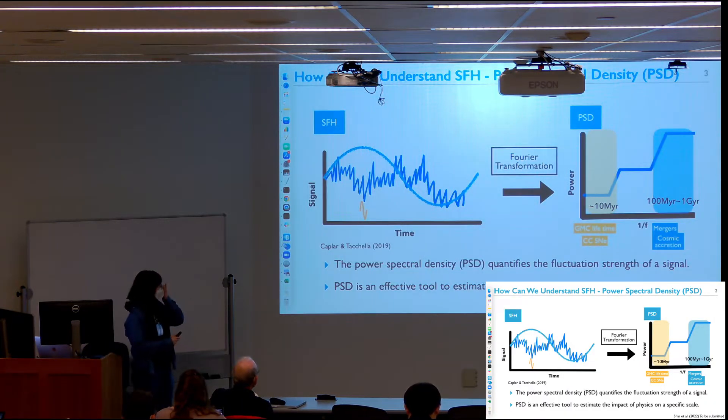How can we study the star formation history? Actually, Chapler and Tekela proposed a very clever idea, that is the Fourier transformation. Since the Fourier transformation quantifies the power of the signal in a specific frequency range, and we know that GMC physics or supernova physics are related with 10 megayear scale, and merger or cosmic accretion is about one gigayear scale.